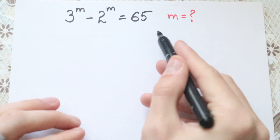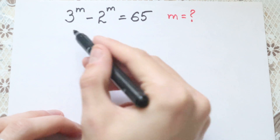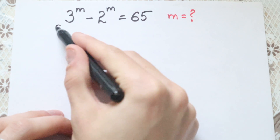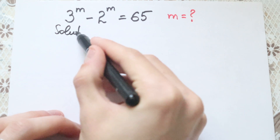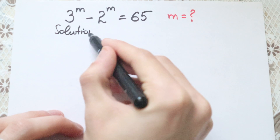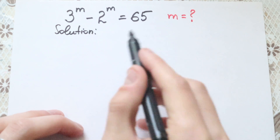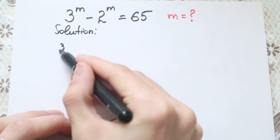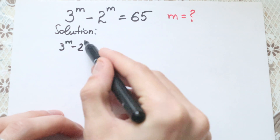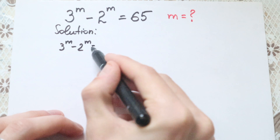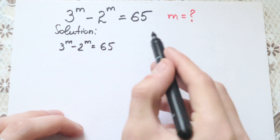I rewrite my solution to this problem. So first I write 'solution' and we are going to solve this interesting algebra problem. I rewrite the problem: 3 to the power m minus 2 to the power m equal to 65.